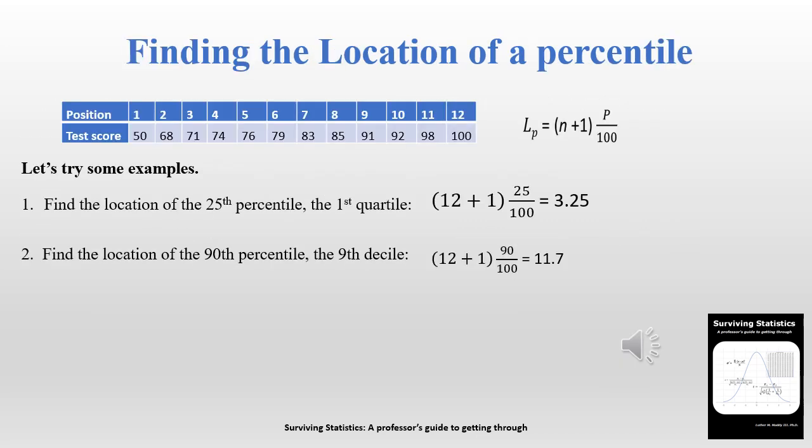Before we talk about finding the location of a percentile, let me backtrack just a bit and remind you of how we found the median location when dealing with an even number of observations. Remember that we ended up with a position halfway between one and halfway between the other, and we took the average of the difference. We're doing essentially the same thing here.